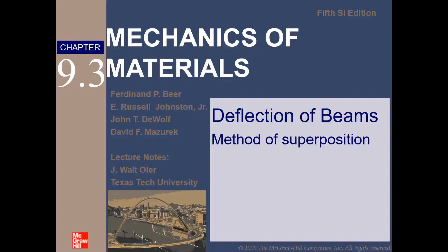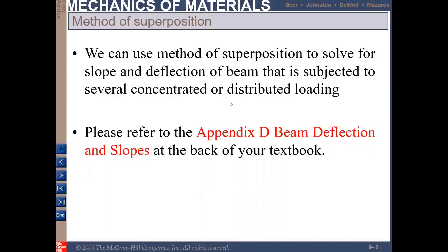What does it mean by method of superposition? We can use the method of superposition to solve for the slope and deflection of a beam that is subjected to several concentrated and/or distributed loadings. That means if you have a beam that has two or more types of loading exerted on it, you can use this method.